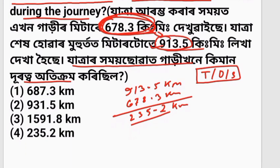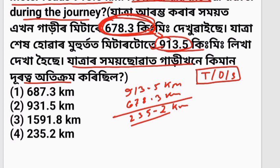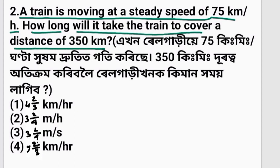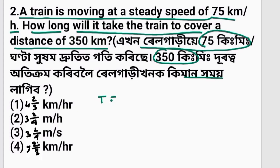A train is moving at a steady speed of 75 km per hour. How long will it take the train to cover a distance of 350 km? If the speed is 75 km per hour, that is very important.